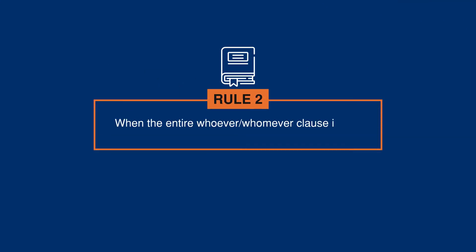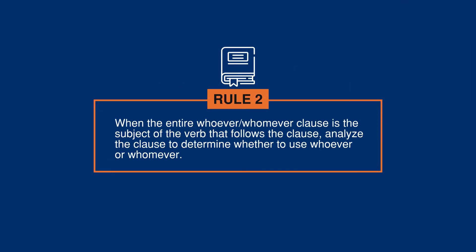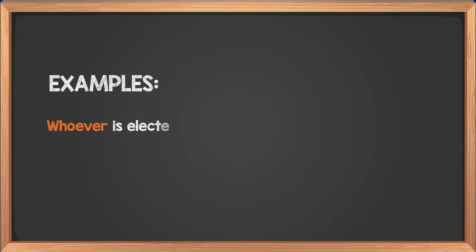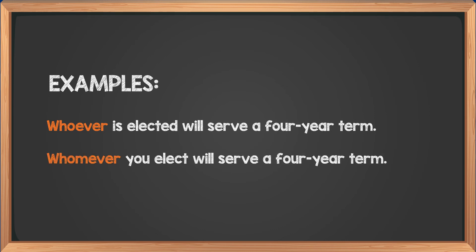Rule two: when the entire whoever/whomever clause is the subject of the verb that follows the clause, analyze the clause to determine whether to use whoever or whomever. Example: Whoever is elected will serve a four-year term. Whoever is the subject of is elected; the clause whoever is elected is the subject of will serve. Whomever you elect will serve a four-year term. Whomever is the object of elect; whomever you elect is the subject of will serve.